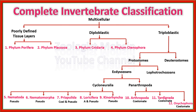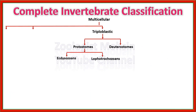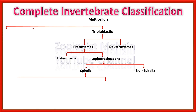Now let's move toward the Lophotrochozoans of Protostomes. Lophotrochozoans are further divided into two categories: Spiralians and non-Spiralians. Spiralians have spiral cleavage during development. Spiralians have three further clades: Platyzoa, Trochozoa, and Lophophorates. Platyzoa are organisms with a flat body. Trochozoans have trochophore larvae in their life cycles, and Lophophorates have a lophophore structure.